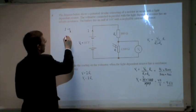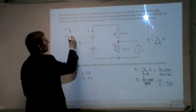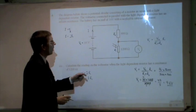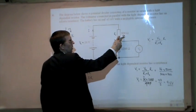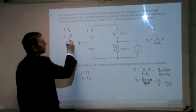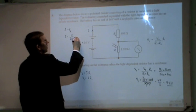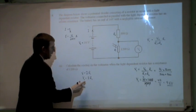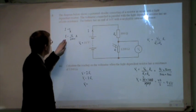So I can say that I equals V, which is Vs, which is 16, divided by the total resistance, which is 1200 plus 800, because they're in series, which is 2000 amps.